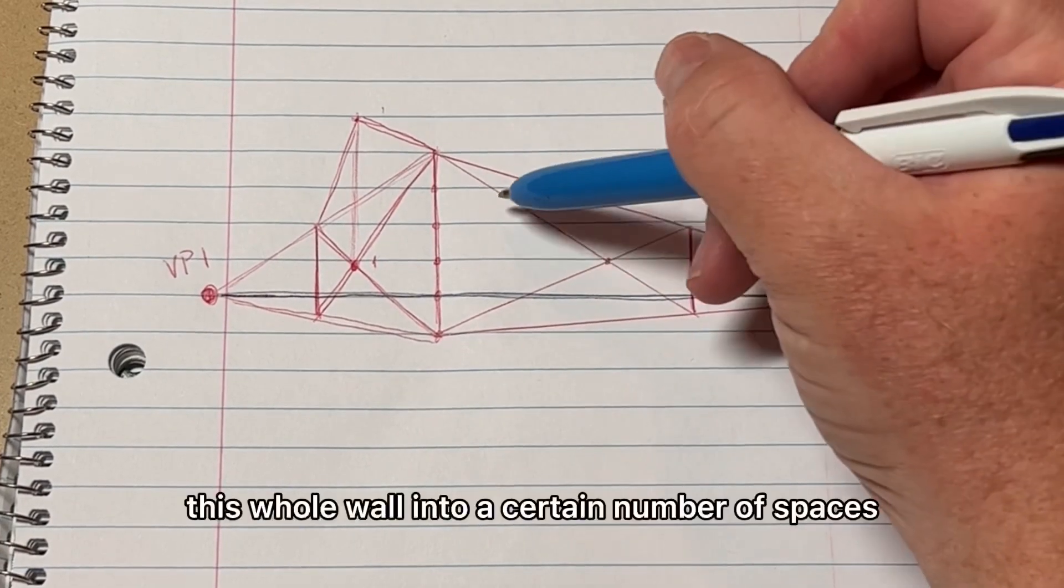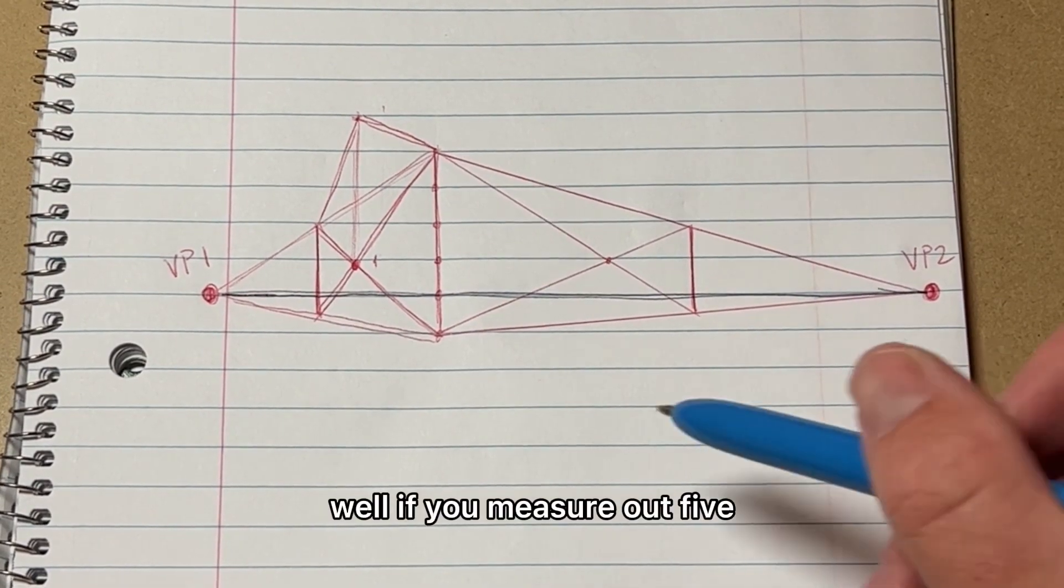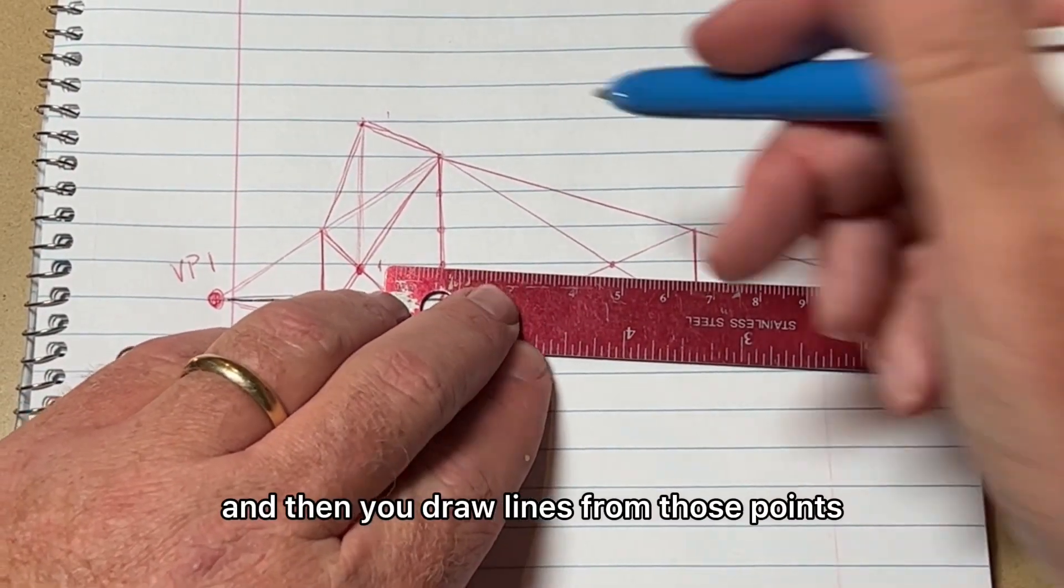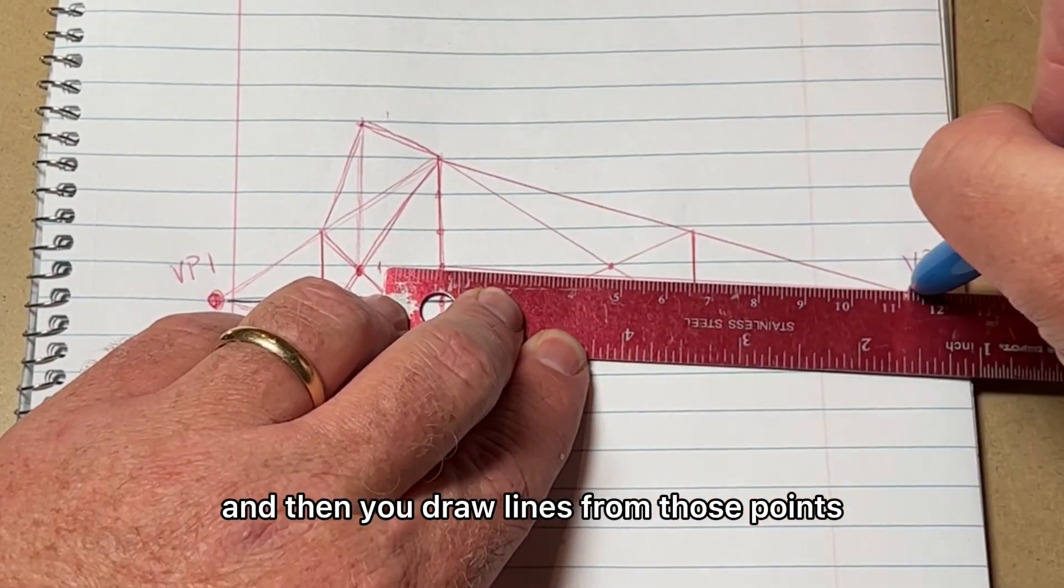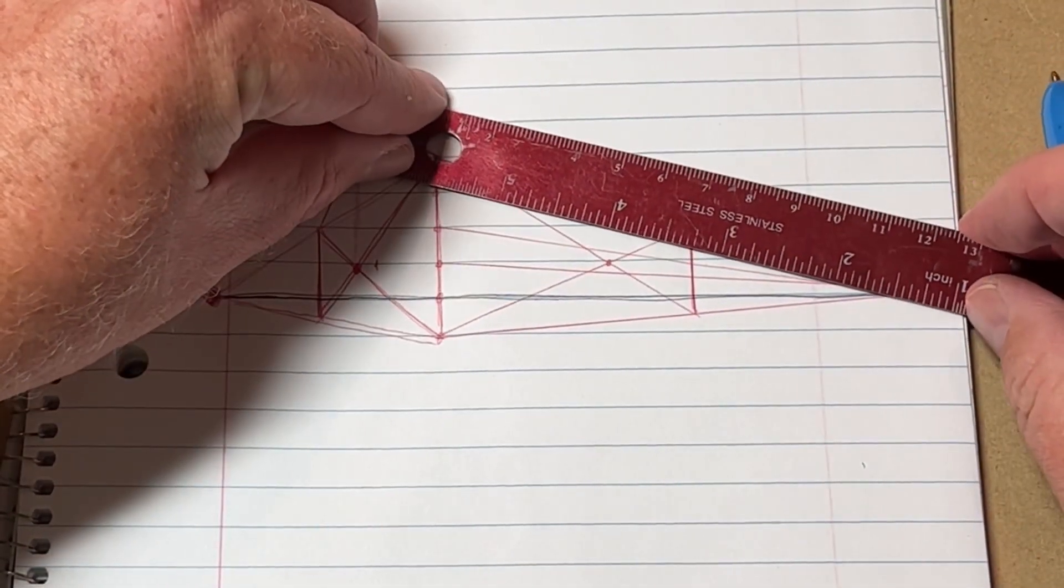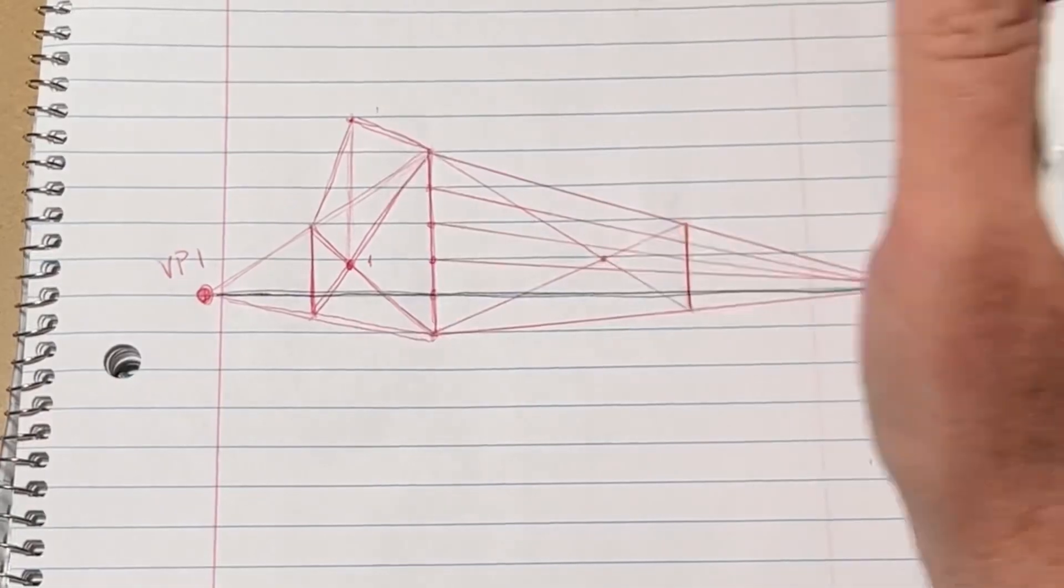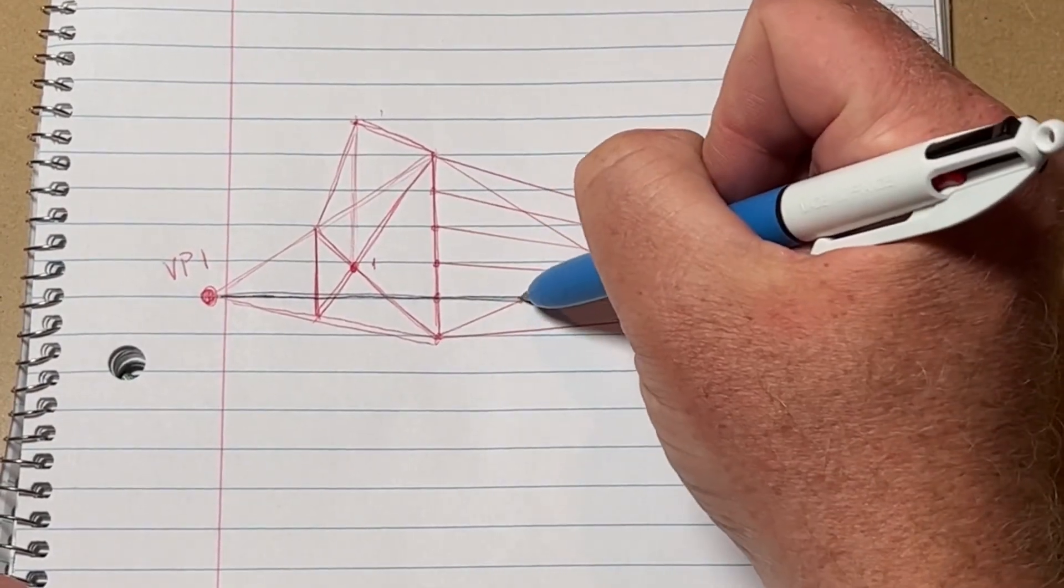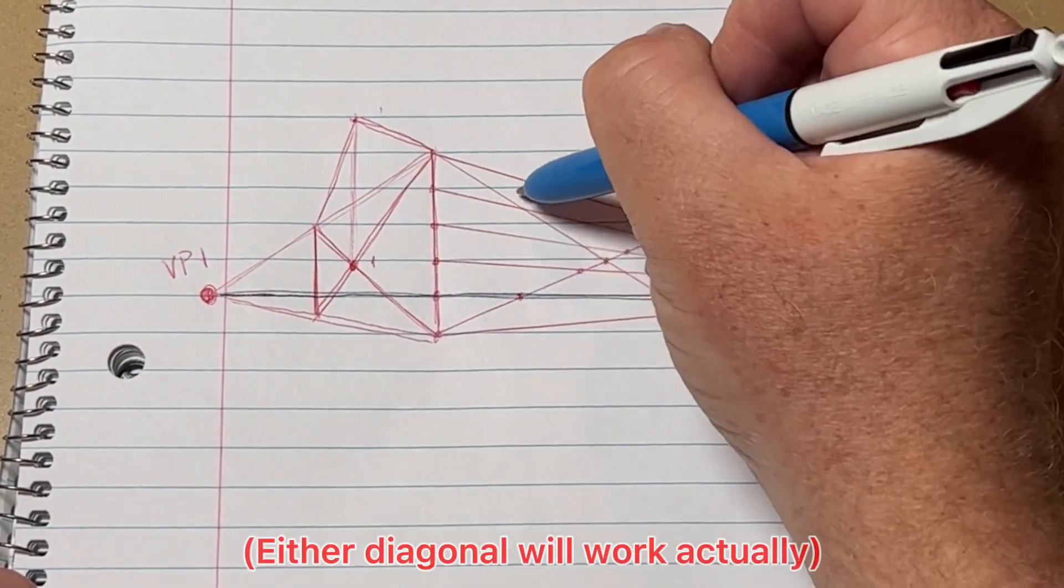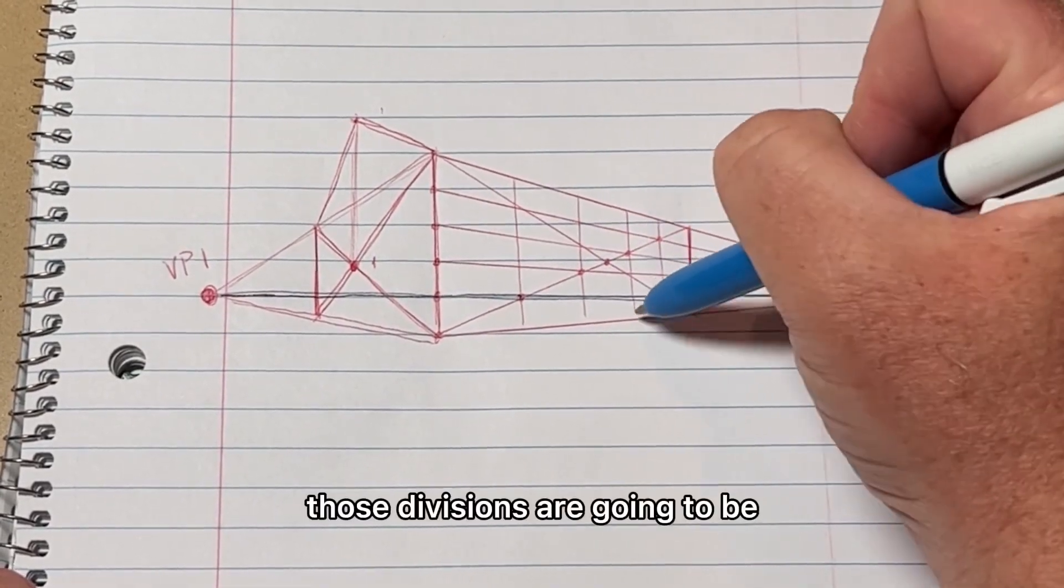Let's say you want to divide this whole wall into a certain number of spaces. Let's say it's five spaces. Well, if you measure out five equal increments on this leading edge and then you draw lines from those points back toward the vanishing point, then where they intersect this diagonal, that's where those divisions are going to be.